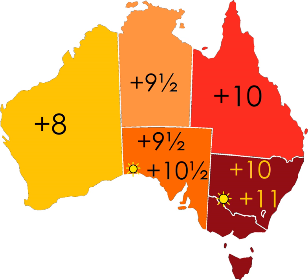Western Standard Time UTC+8: Western Australia Standard Time Act 2005. Central Standard Time UTC+9:30: South Australia Standard Time Act 2009 and the Daylight Saving Act 1971; Northern Territory Standard Time Act 2005. Eastern Standard Time UTC+10: Queensland Standard Time Act 1894; New South Wales Standard Time Act 1987 No. 149; Australian Capital Territory Standard Time and Summer Time Act 1972; Victoria Summer Time Act 1972; Tasmania Standard Time Act 1895 and the Daylight Saving Act 2007.